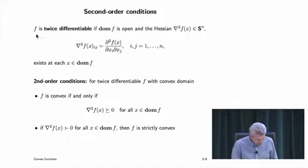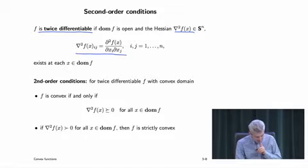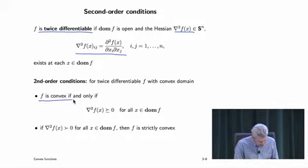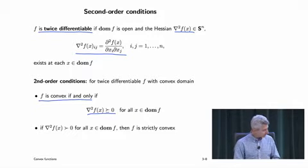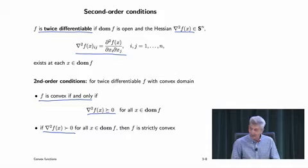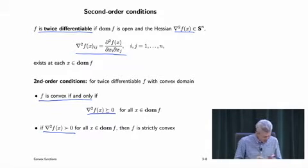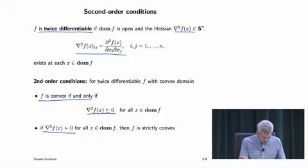Second-order conditions: if a function is twice differentiable, the Hessian — denoted the matrix of all second partial derivatives — exists. A function is convex if and only if its Hessian is positive semi-definite everywhere in the domain. If the Hessian is positive definite, that guarantees strict convexity; but the converse is false — you can be strictly convex without having a positive definite Hessian everywhere.